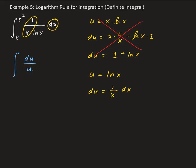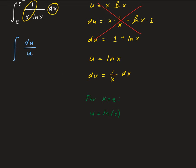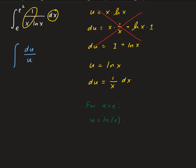Now we have to change the limits of integration. For x equals e, u is going to equal the natural log of e, which is 1, since the natural log and exponential functions are inverse functions of each other. And for x equals e squared, u equals the natural log of e squared, which gives us 2. So we have the integral of du over u going from 1 to 2.